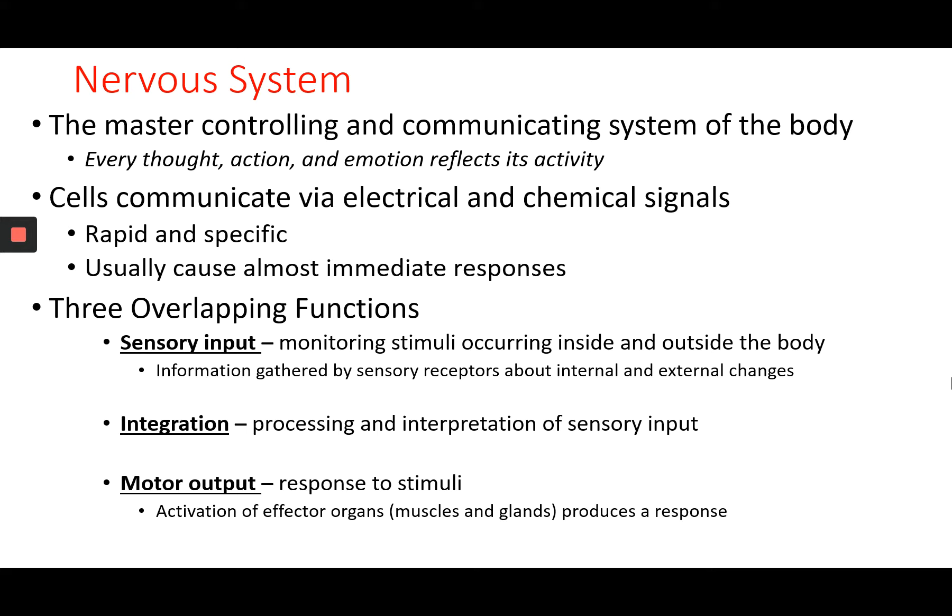Integration is where we put all information together and sensory processing occurs. Then a motor output is decided upon based on that sensory input. The motor output leaves the central nervous system carried by an efferent neuron — efferent like 'exit' — which carries that motor output as a response to stimuli, going to effector organs to cause contraction or gland secretion. So we need sensory input, integration stations in the brain and spinal cord, and a motor output so that our body can actually respond.